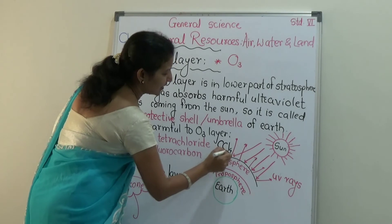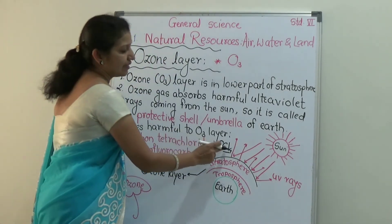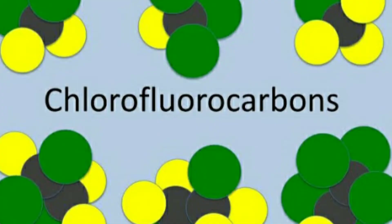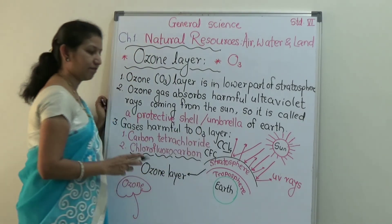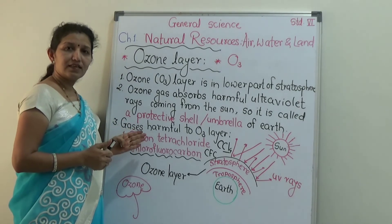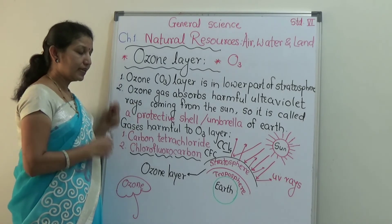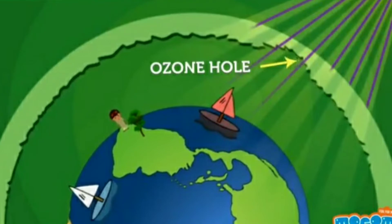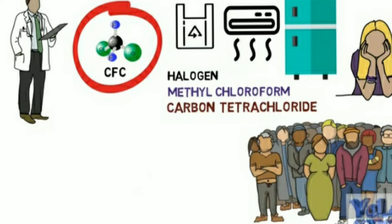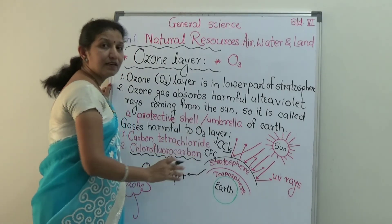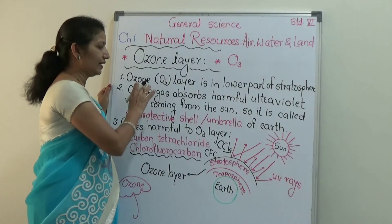CCl4 is the molecular formula of carbon tetrachloride. Then there is chlorofluorocarbon, also called CFC, which is also a very harmful gas. These two gases — CCl4 and CFC — are causing the depletion of the ozone layer. There are holes in the ozone layer because of global warming and the increased use of refrigerators, ACs, and fire extinguishers. Because of all these things, we are responsible for the depletion of this very important ozone layer.